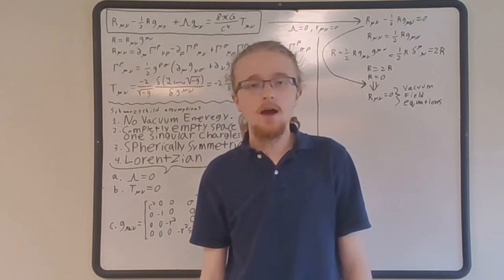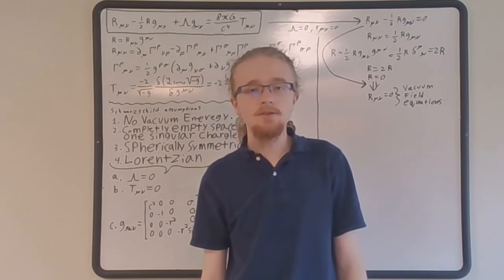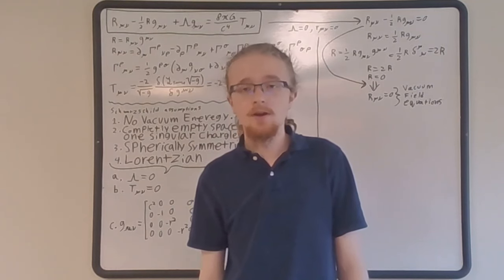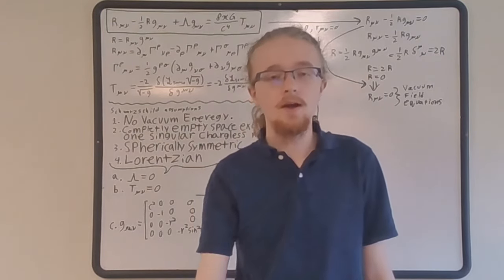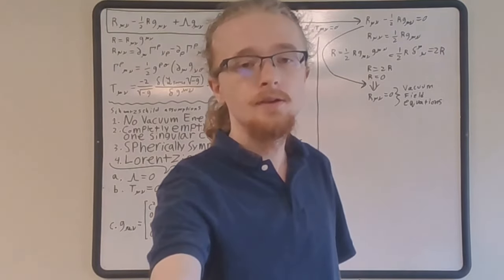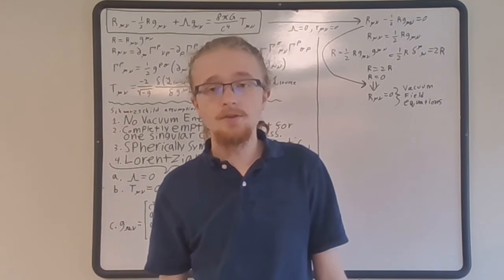Third, altering the pure theta and pure phi components in any way also breaks spherical symmetry, so the most general allowed alteration must not include changing these components. This leaves only two components: the pure time and the pure radial components. These can be altered without violating conditions three or four, but cannot be altered arbitrarily — the most general allowed alteration must not change the sign of the components and must not depend on time or angular coordinates. Therefore, the most general metric satisfying all the Schwarzschild assumptions is the Schwarzschild ansatz, where the only alterations are two purely radially dependent functions in the time and radial components.